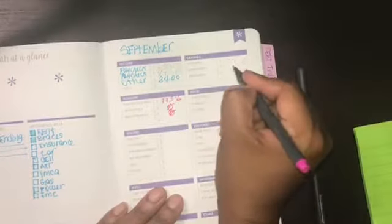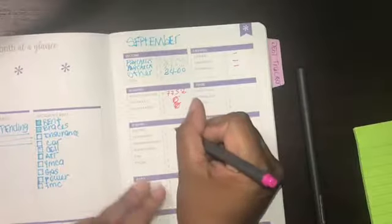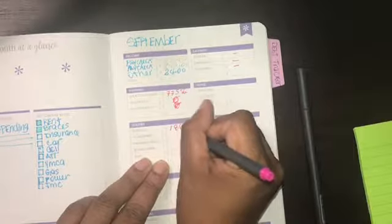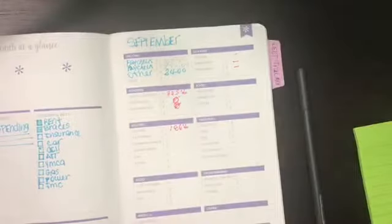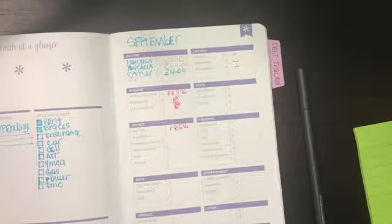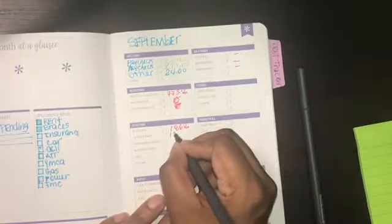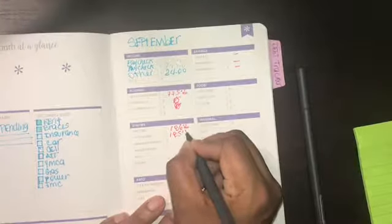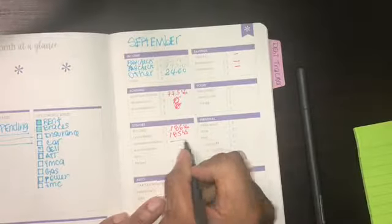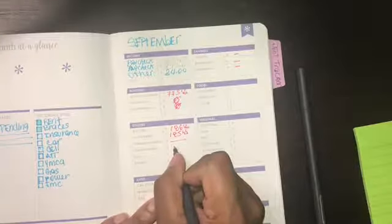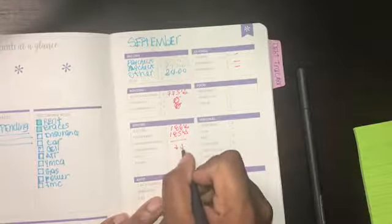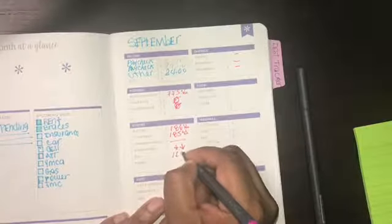Electric is $186. I'm on a payment plan and trust me, in the summer the power bill is outrageous. Water is $123 altogether. My phone is $222.50.